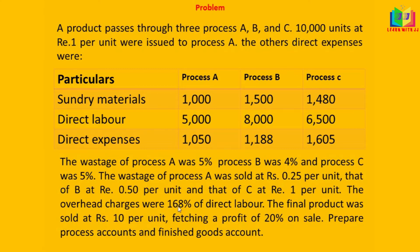The overhead charges were 168% of direct labour. We have to find 168% of direct labour for each respective process. The final product was sold at rupees 10 per unit, fetching a profit of 20% on sale. We need to prepare the process account and finished goods account.